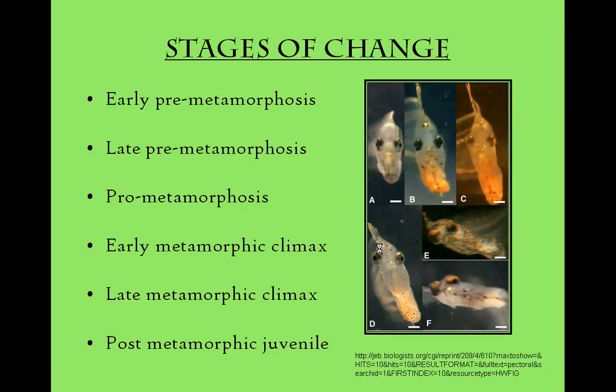Picture D depicts the early metamorphic climax stage, when the eye migrates halfway to the dorsal midline, and the angle of tilt further increases to roughly 20 degrees. Picture E is known as the late metamorphic climax, and occurs when the migrating eye becomes very close to the dorsal midline, and the angle of tilt can be anywhere from 50 to 70 degrees.